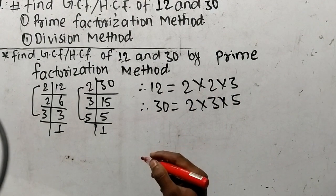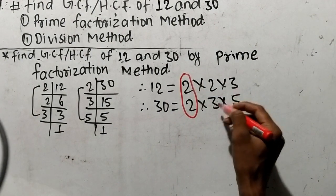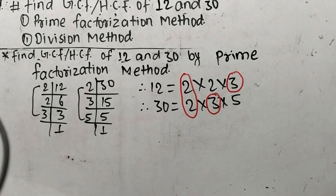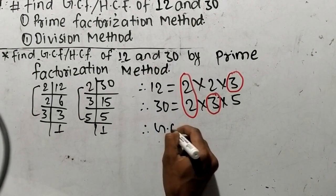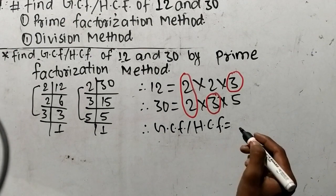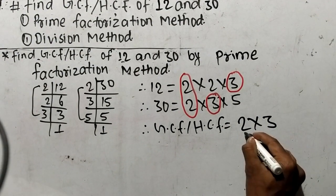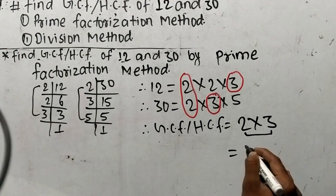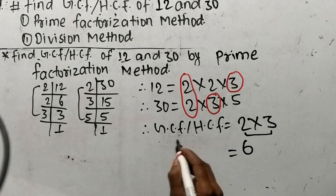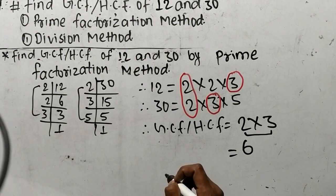From these prime factors, now we find out the common factors. Here 2 appears in both, so 2 is our first common factor. Similarly, 3 appears in both, so 3 is also our common factor. The remaining 2 and 5 are non-common factors. GCF or HCF is the product of all common factors only, so common factors are 2 and 3. The product of 2 times 3 is 6, therefore 6 is the GCF or HCF of 12 and 30. In this way we can find out GCF by prime factorization method.